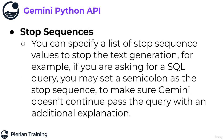There's also stop sequences. You can specify a list of stop sequence values to stop the text generation. For example, maybe you're asking Gemini to produce a SQL query and you know SQL queries end with a semicolon. So you set a semicolon as the stop sequence to make sure Gemini doesn't continue past the query with an additional explanation. Gemini, especially in chat mode, is very helpful and tends to explain the results it returns, but if you just wanted the SQL query, you could hard code a stop sequence like a semicolon.